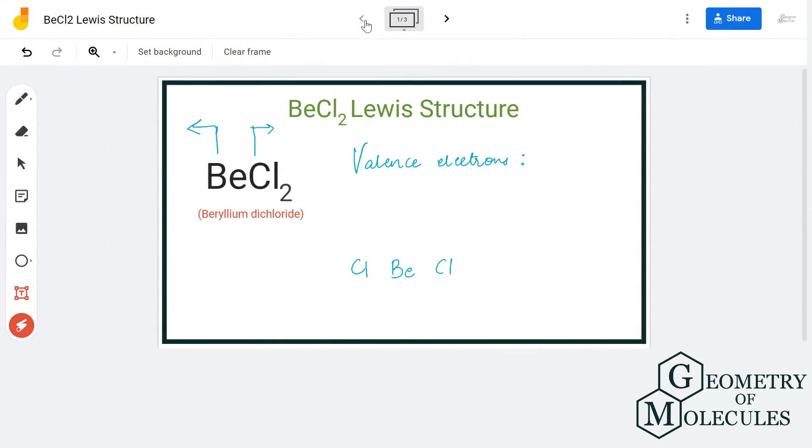Hi guys, in this video we are going to look at the Lewis structure of BeCl2, the chemical formula for beryllium dichloride. It is made up of one beryllium atom and two chlorine atoms.